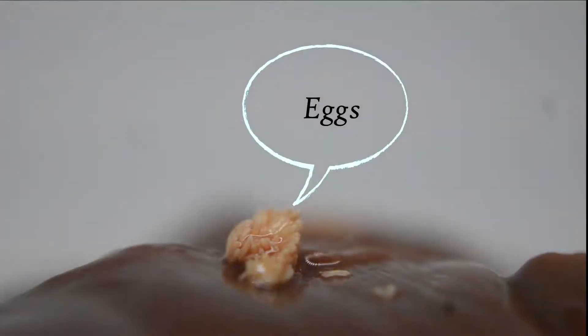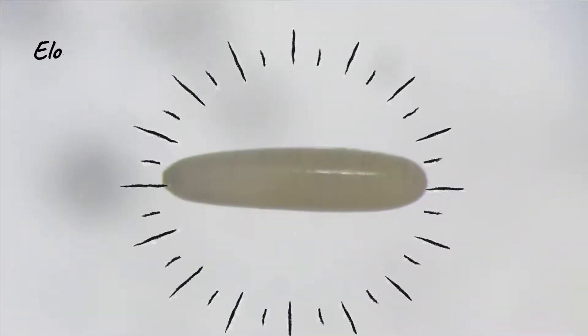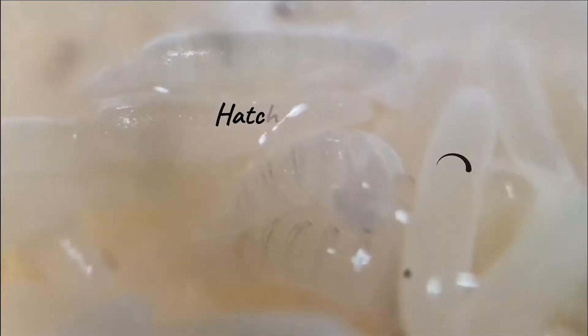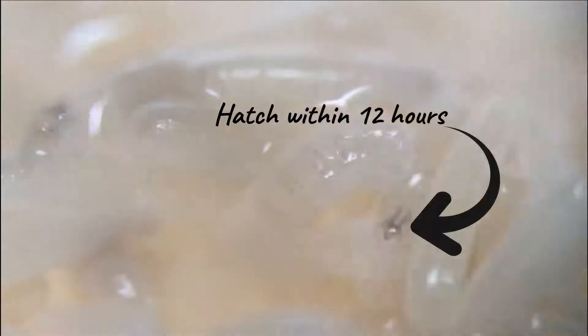They are life starts as an egg laid by the female flies. Eggs of the blowflies are elongated in shape and creamy in color with a length of 1 to 2 millimeters. They are normally hatched within 12 hours.